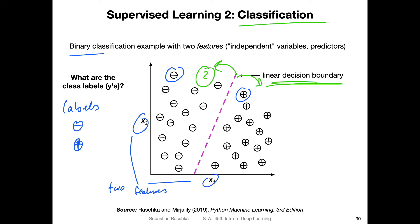The decision boundary here is linear, but it can also be complex. Deep neural networks are actually learning very complex decision boundaries. Also in practice, when we have real-world data, we rarely only have two features — we usually have very high-dimensional data, so we can't easily visualize it. That's just an overview of a simple case of classification, so you know the two different types of supervised learning: regression and classification.